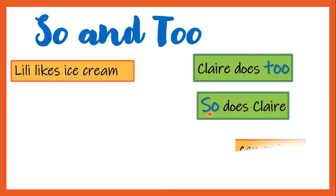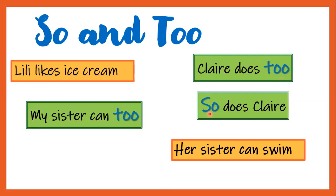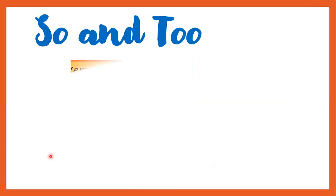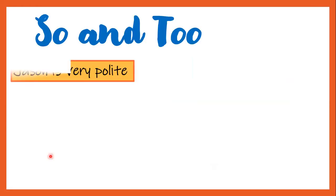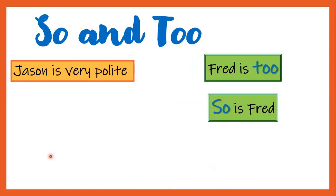Here we have another example: 'Her sister can swim — My sister can too / So can my sister.' It means the same thing; the only difference is the word order. Too goes at the end of the sentence, and so goes at the beginning. Here is another example: 'Jason is very polite — Fred is too / So is Fred.'